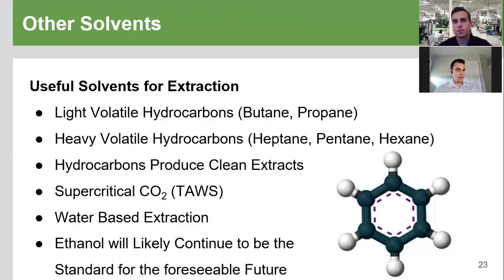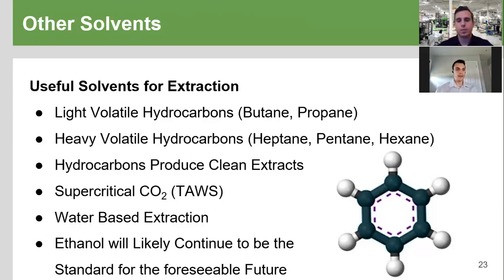Coming down the pipeline are water-based extractions, where you directly extract cannabinoid acids like CBDA and THCA in aqueous solutions and then use liquid-liquid separation to avoid the solvent extraction step and avoid having to boil solvents. However, many of these processes still involve an ethanol or heptane separation step, so you're still going to deal with solvent recovery and maintaining a closed loop. Most of these are still lab-scale or bench-top processes — they haven't been industrialized or rolled out yet. These are future technologies; for right now, ethanol remains the proven default choice.